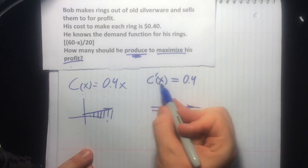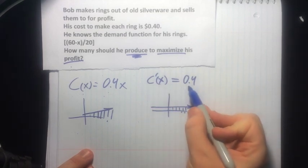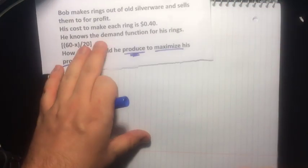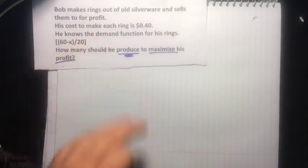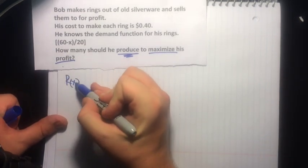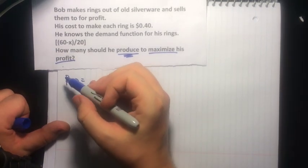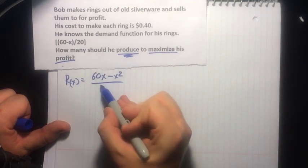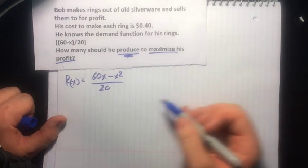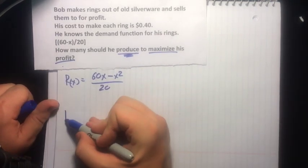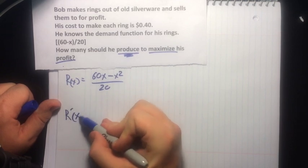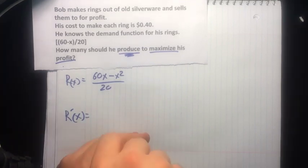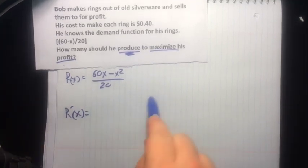Our revenue function is going to be a little more interesting. Call that R(x). That was (60x - x²)/20. So let's talk about what R'(x) would mean. That's the slope of this graph. And you can use that to predict what the next one will cost.